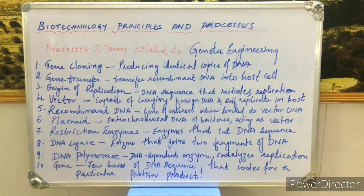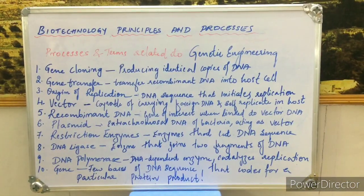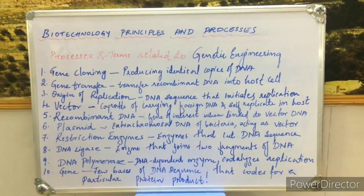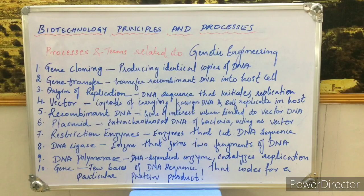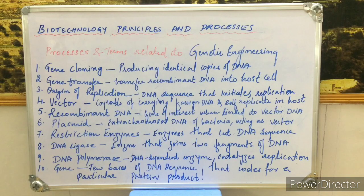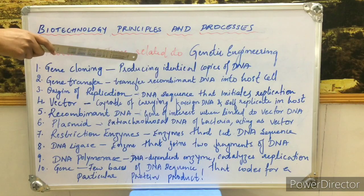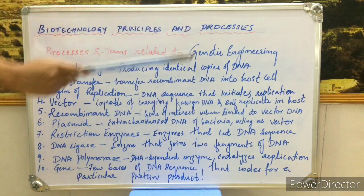Students, today I will be continuing the chapter biotechnology principles and processes. We have already discussed in the previous class what is biotechnology, what are the principles of biotechnology, what is the need for genetic engineering, as well as the advantages of genetic engineering over traditional hybridization. Today I will be proceeding with the next part of this chapter — processes and terms related to biotechnology and genetic engineering.